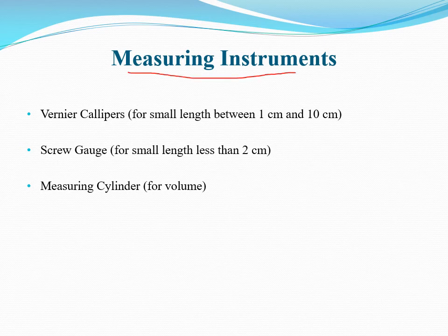Measuring instruments are used to measure various physical quantities such as length, mass, time, volume, etc. Measuring instruments used nowadays are highly reliable, precise and accurate. Here we shall describe the following measuring instruments: 1. Vernier Calipers, 2. Screw Gauge, 3. Measuring Cylinders.